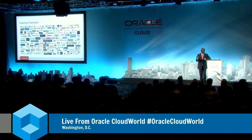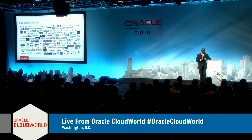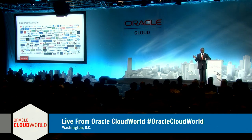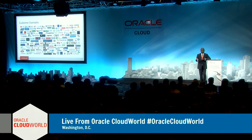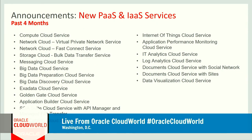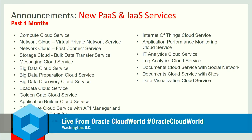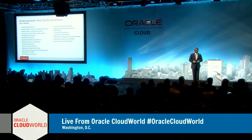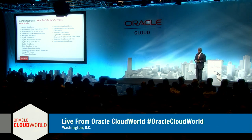We've introduced a lot of new PaaS and IaaS services, including GoldenGate as a Service so you can replicate transactions from on-premise into the cloud and migrate your database with no downtime. Most importantly today, we have a big announcement: historically, people have asked how they can use our cloud if their country requires data to stay within its boundaries.